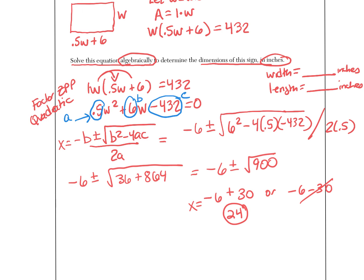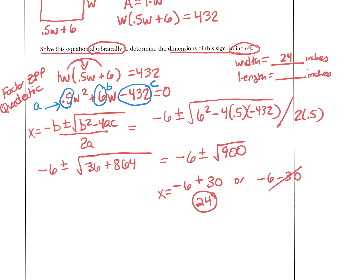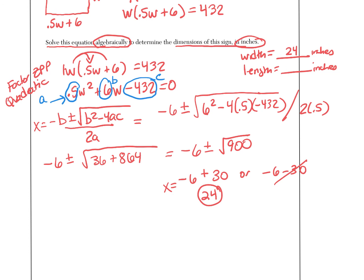So now you have found out that x equals 24, or w equals 24, so you know that your width is 24. And then your length is half of w plus 6, so I'll just show finding that. So your length is half of 24 plus 6. Half of 24 is 12 plus 6 gives you 18.